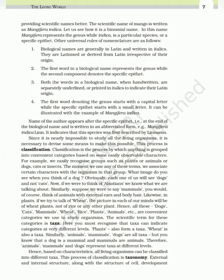Since it is nearly impossible to study all the living organisms, it is necessary to devise some means to make this possible — this process is classification. Classification is the process by which anything is grouped into convenient categories based on some easily observable characters. For example, we easily recognize groups such as plants or animals, or dogs, cats, or insects. The moment we use any of these terms, we associate certain characters with the organism in that group.